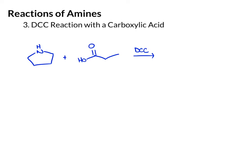The third reaction is a DCC reaction between carboxylic acids and amines. In this case, we have a secondary cyclic amine, but it doesn't have to be cyclic. We can also use primary amines or ammonia. In the presence of DCC, we're going to couple — the carbonyl is formed, but now the nitrogen takes the place of the OH, and we get the amide as the product.